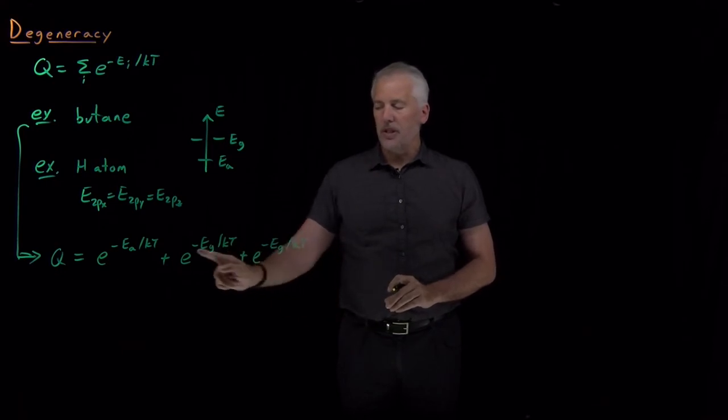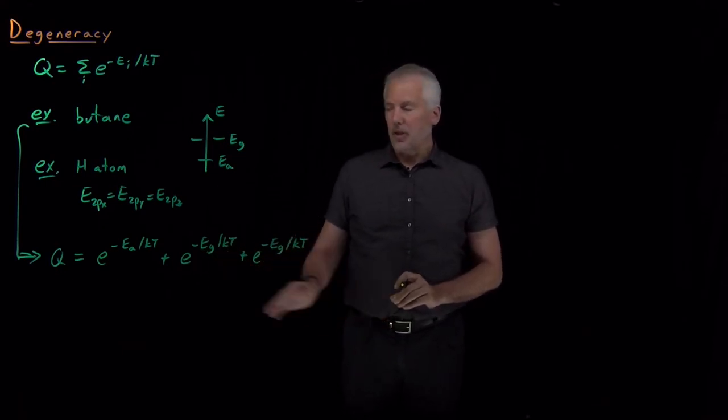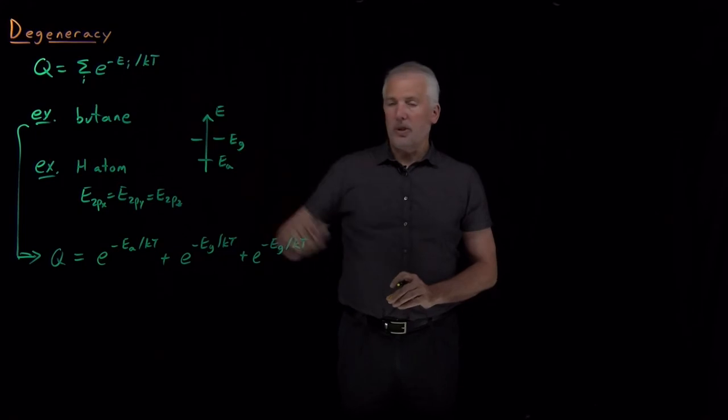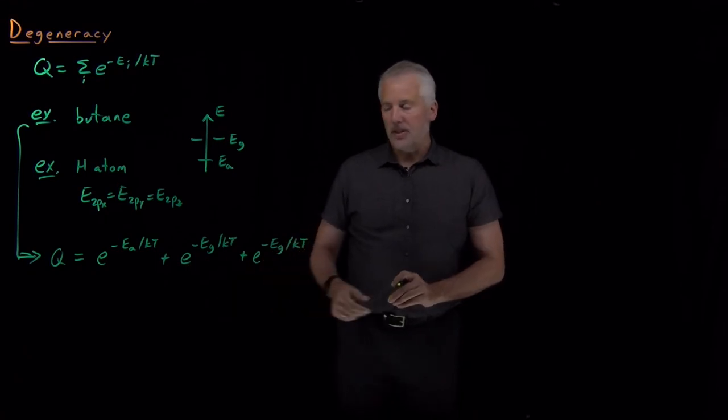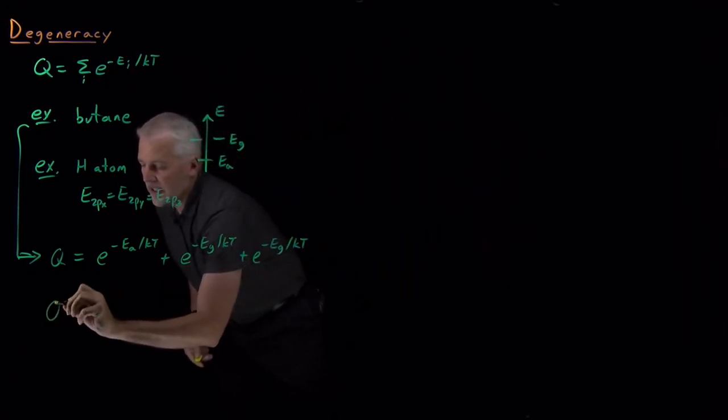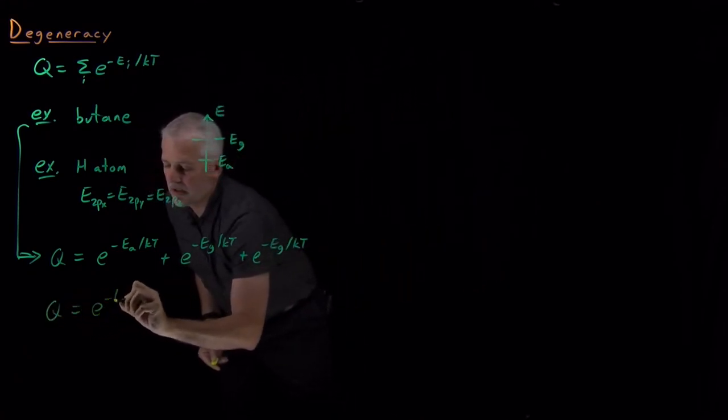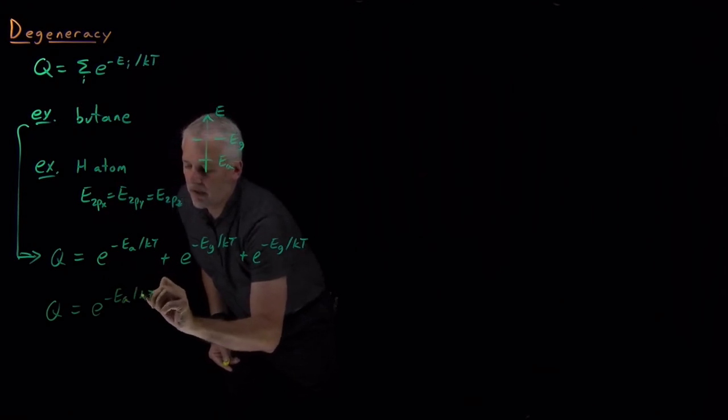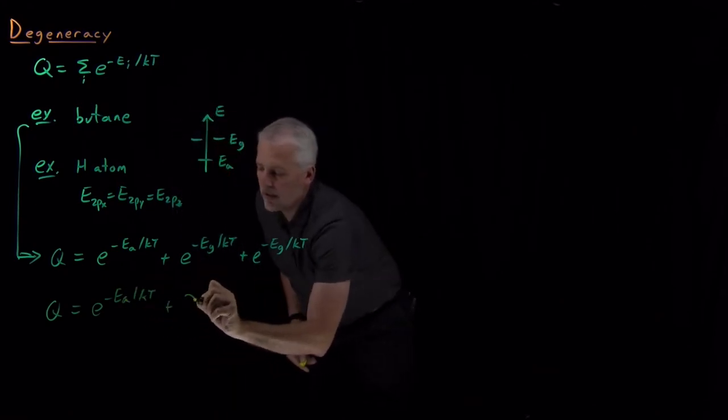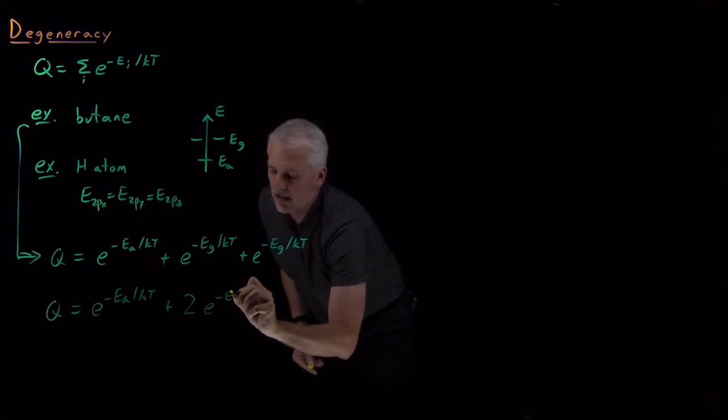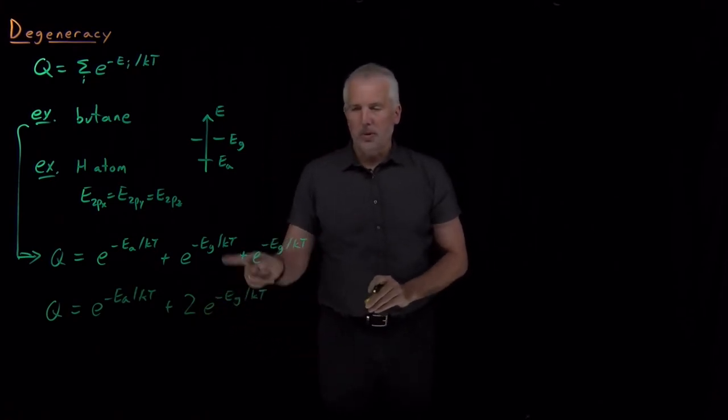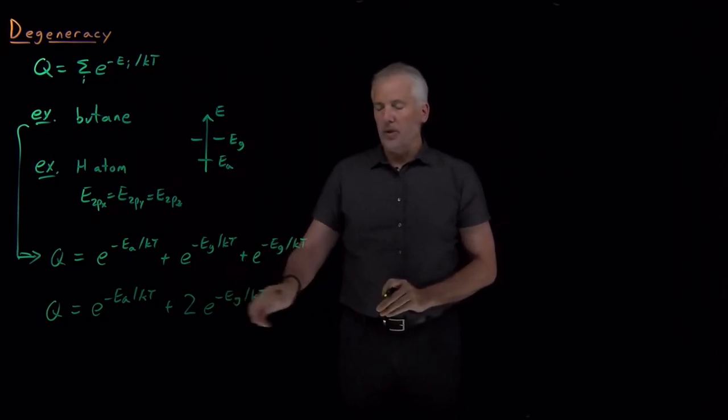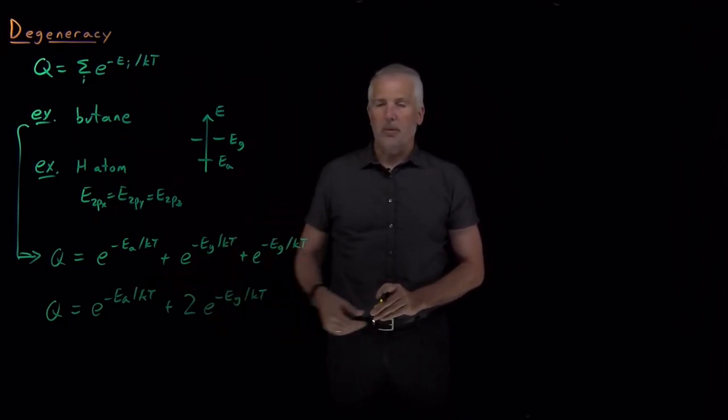The energy for the two Gauche states are the same as each other. So that's taking this expression literally, writing out one term for each state of the system. But, of course, algebraically, this term and this term are the same. So we could also say the partition function is e to the minus e anti over kT plus twice e to the minus e Gauche over kT. Of course, those two expressions are the same. It doesn't matter which one we use, we'll get the same result for the partition function.